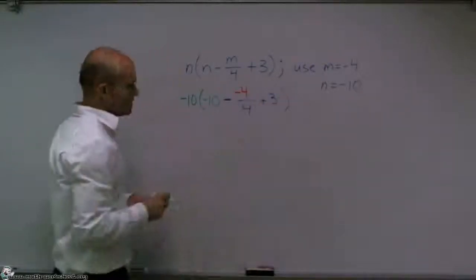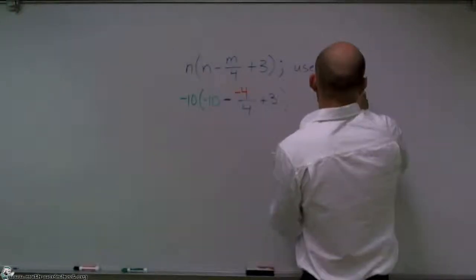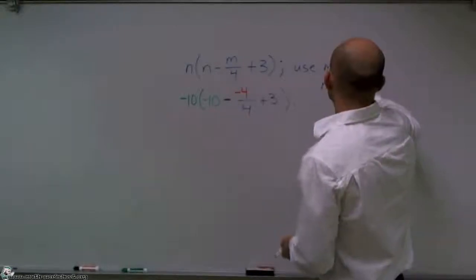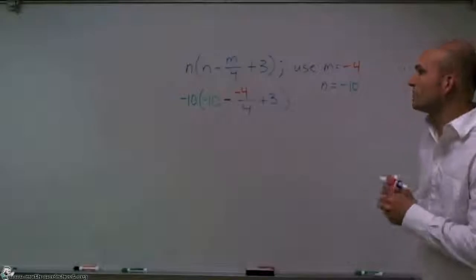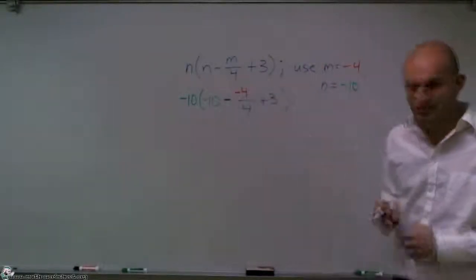Okay, so you can see that, let's write this here: negative 10 and that is a negative 4. So what you can see is I plugged in the negative 4 in for the m and the negative 10 in for the n.